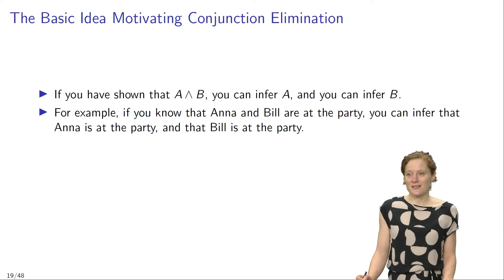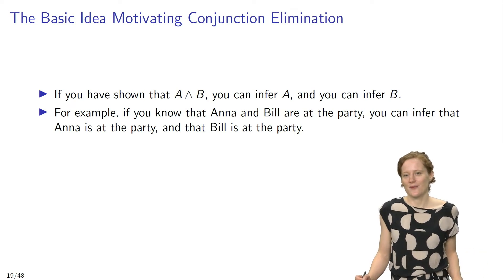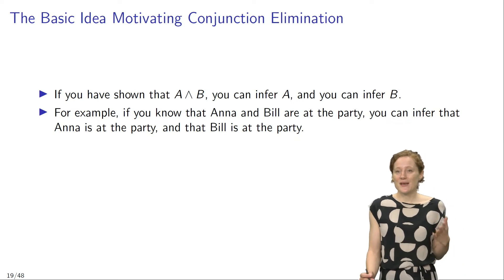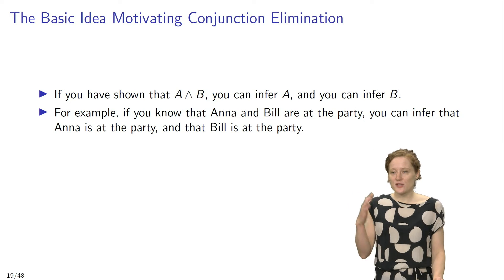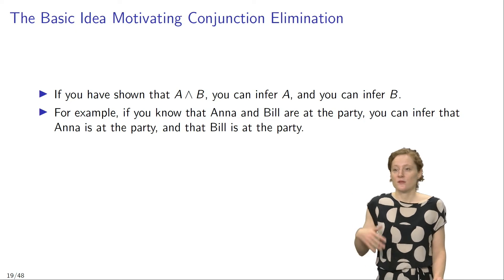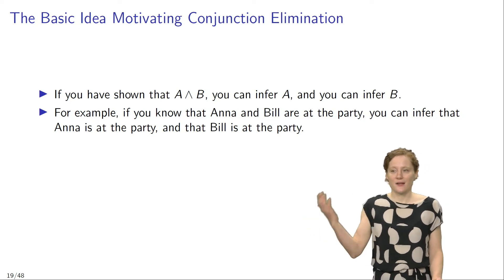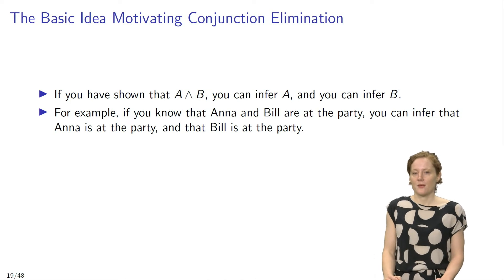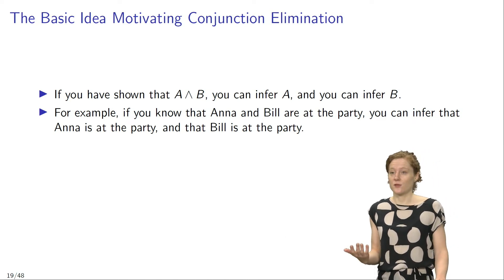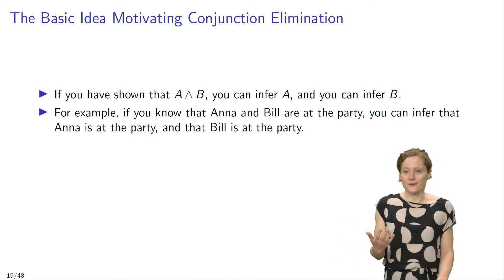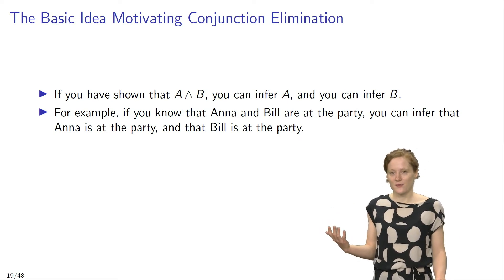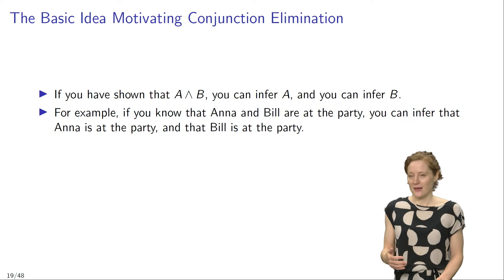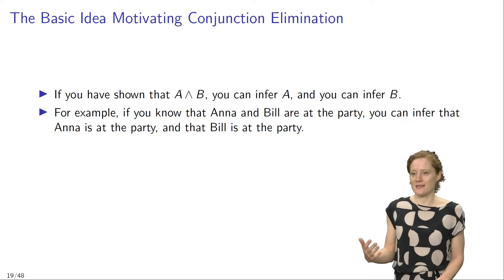Conjunction elimination is a similarly simple and easy rule of inference. The basic idea motivating conjunction elimination is this: if you have shown that A and B, you can infer A and you can infer B — you can infer either one of the two conjuncts. So for example, if you know that Anna and Bill are at the party, you can infer that Anna is at the party and you can also infer that Bill is at the party.